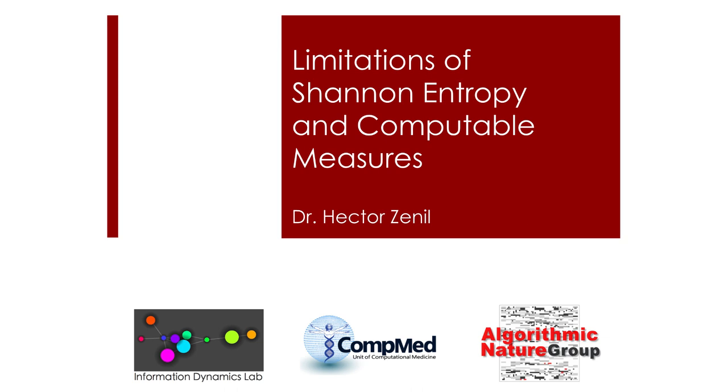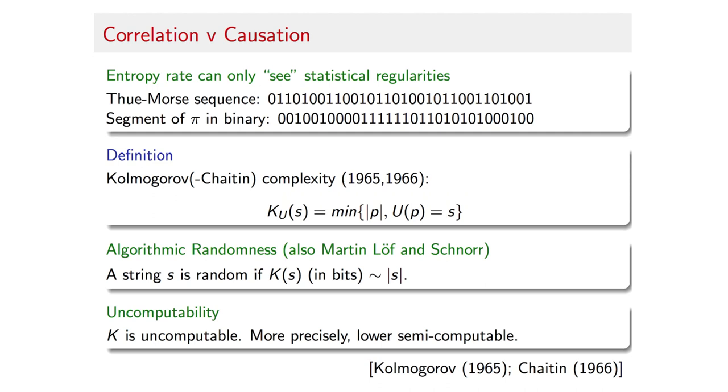In this lecture, we will contrast computable measures such as Shannon entropy and algorithmic complexity when it comes to characterizing an object, particularly a special graph that we created for this purpose.